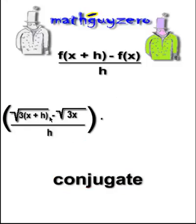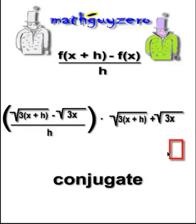Now, conjugate basically is the exact same thing, the exact same terms. That's the same as that. But the signs will be different between them. So this is a subtraction, this has to be an addition. That makes it a conjugate.